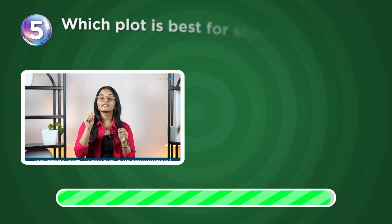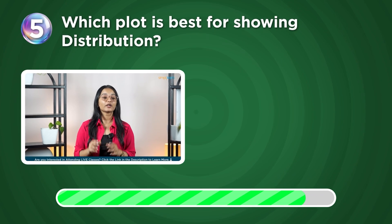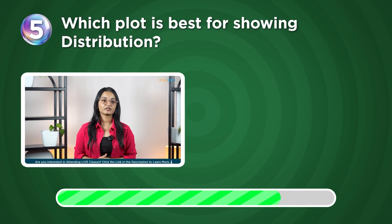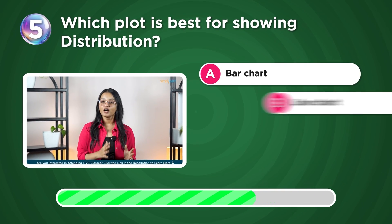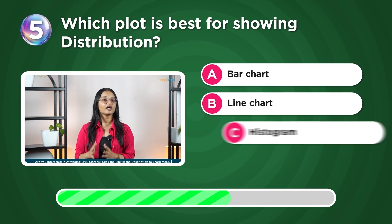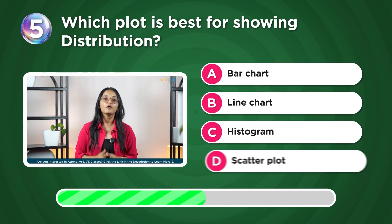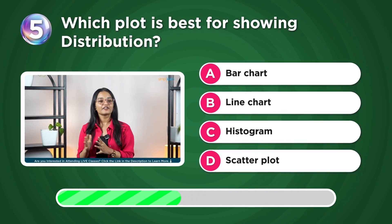Which plot is best for showing distribution? Bar chart, line chart, histogram, or scatter plot?